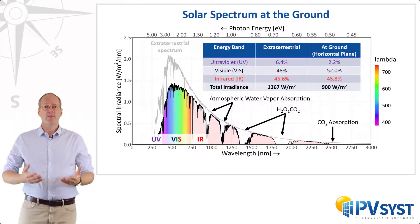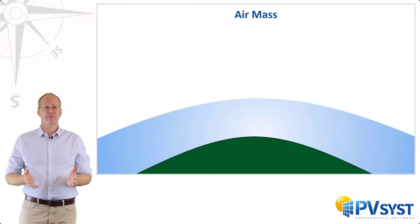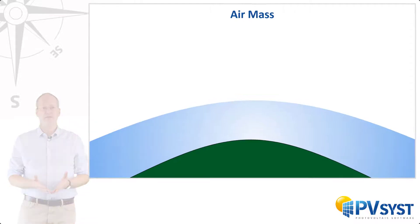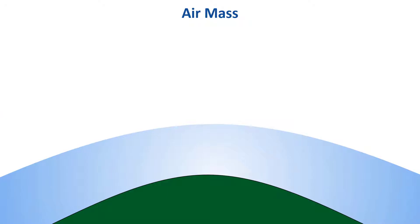To explain this further, we will use a concept called air mass. Air mass, designated by AM, is a quantity used to describe how much air the sunlight passes through, normalized to the thickness of the Earth's atmosphere. In the diagram, the green area represents the Earth's surface, while the blue area represents the atmosphere. An observer at sea level with the sun directly overhead would receive a ray of sunshine whose path travels through the atmosphere — we refer to this distance as a reference optical path length.